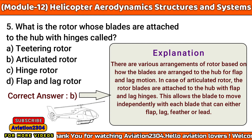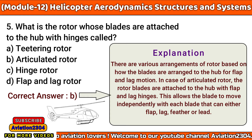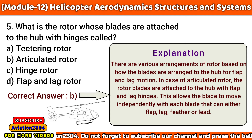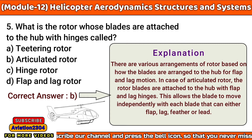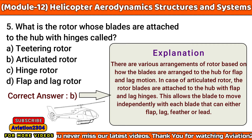What is the rotor whose blades are attached to the hub with hinges called? A. Teetering rotor, B. Articulated rotor, C. Hinge rotor, D. Flap and lag rotor. The correct answer is B. There are various arrangements of rotor based on how the blades are arranged to the hub. For flap and lag motion, in the case of an articulated rotor, the rotor blades are attached to the hub with flap and lag hinges. This allows each blade to move independently and either flap, lag, feather, or lead.